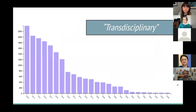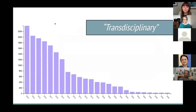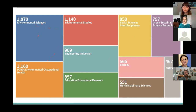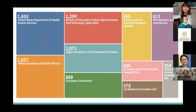I went to Web of Science and put in 'transdisciplinary' in all fields. In 1996 there were very few results, and by 2020 the number has grown substantially — not a surprise, but I like to see it. You can break it down by disciplines where that word is being used in published literature: environmental sciences studies, public and occupational health, engineering, educational research, social sciences, green and sustainable technology, and so forth. Web of Science also shows funding sources — these are the top 10 where published papers noted they received funding.